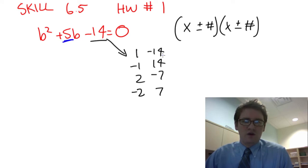So 1 minus 14 does not equal positive 5, so that's not one of them. Negative 1 plus 14 does not work. 2 minus 7, well that equals negative 5, so that won't work. And negative 2 plus 7 would give me positive 5. So that right there is my correct answer.